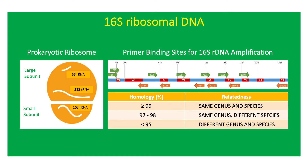If two strains have equal to or greater than 99% homology in the full-length 16S rDNA sequence, they have the same genus and species. If homology is between 97% to 98%, they have the same genus but different species. If homology is less than 95%, it is considered to be a different genus and species.